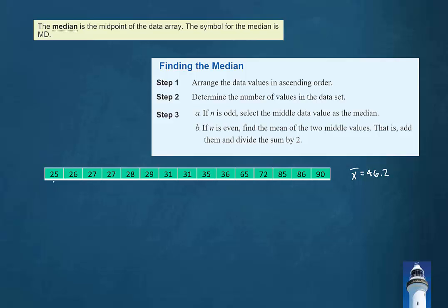Counting the number of data values in this data set, we would see that we have 15 data values. We have an odd number of data values in the data set, so the median will be the middle data value. So counting from the bottom eight values—one, two, three, four, five, six, seven, eight—we wind up at this value 31.